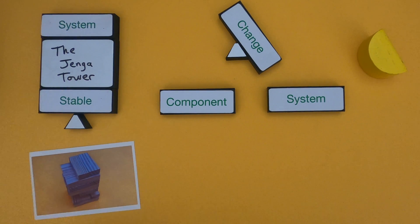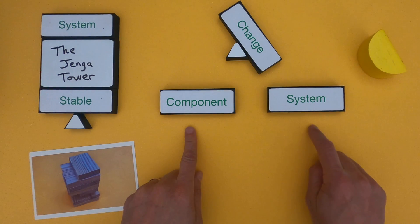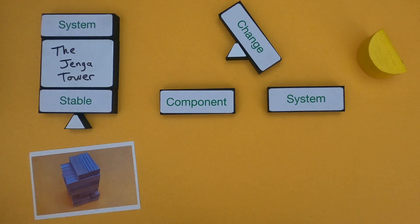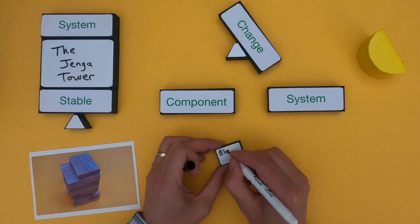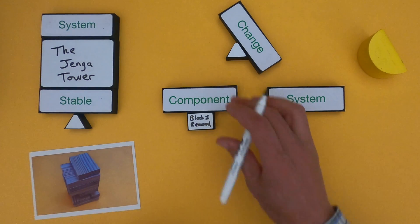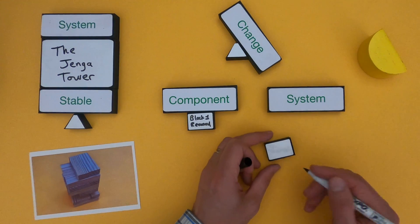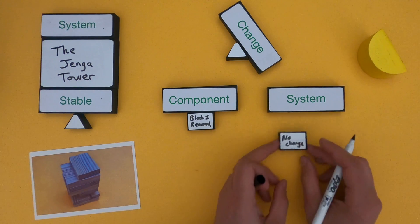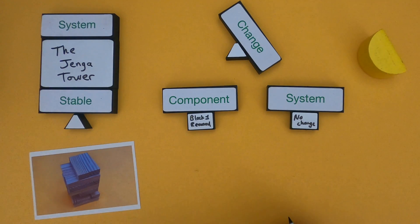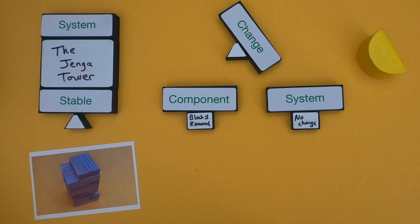The first thing I'm going to do is identify what happened in the change in the component and what happened in the overall change of the system. When I removed block one as a component of the system, what was the change? There was really no change at all. Now I'm going to go through and show the other components and the system changes as well.